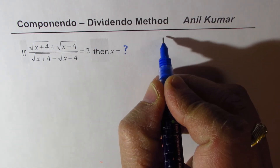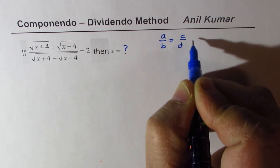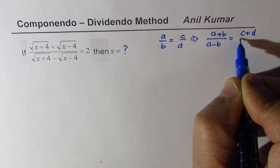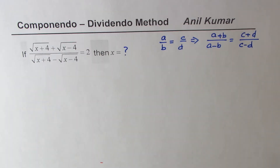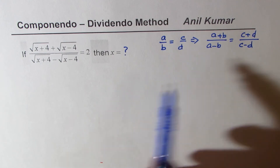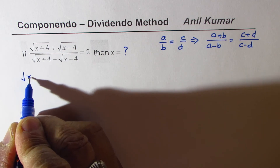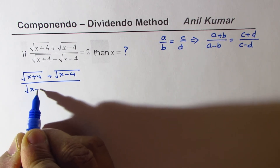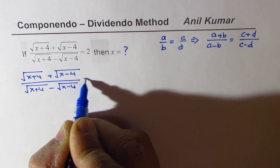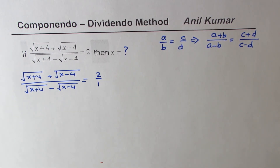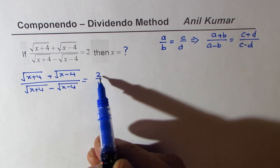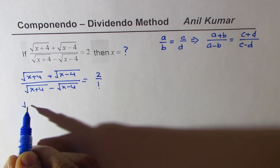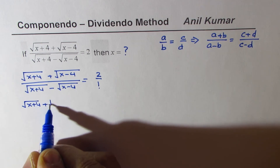The technique is: if A over B equals C over D, that implies A plus B over A minus B equals C plus D over C minus D. Now what we are given is square root of x plus 4 plus square root of x minus 4, divided by square root of x plus 4 minus square root of x minus 4, equals 2 — which we can write as 2 over 1. Think of A over B equals C over D where C and D are 2 and 1. So we apply Componendo Dividendo and rewrite the left side: in the numerator we add square root of x plus 4 plus square root of x minus 4 to the denominator.